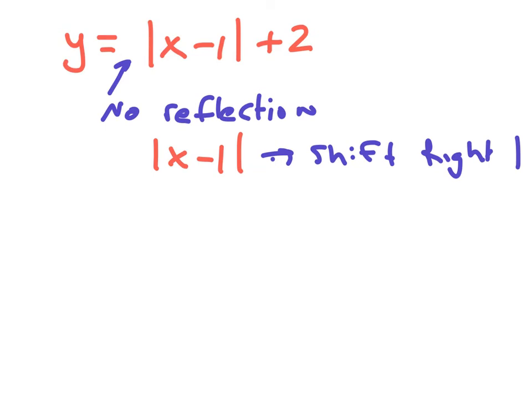The final piece of this equation, we have the plus 2 on the outside, which tells us that we are dealing with a vertical shift, and since it's a plus 2, that means we are going to go up 2 units. So we have no reflection, a shift to the right 1, and a shift up 2.